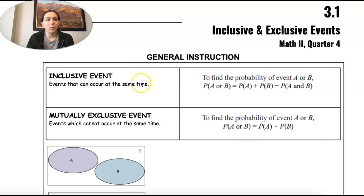So unit 3 is more probability. This time we're talking about inclusive and exclusive events.